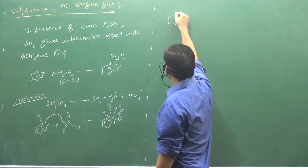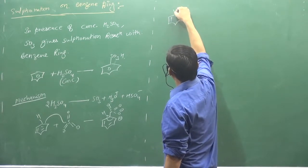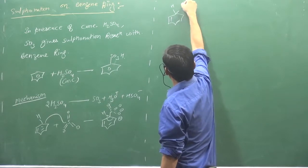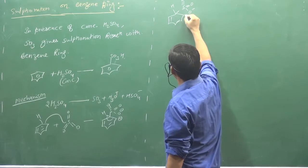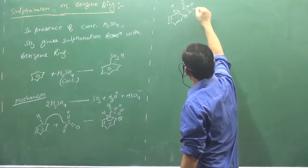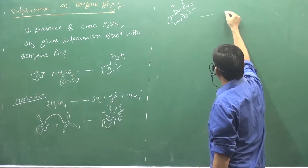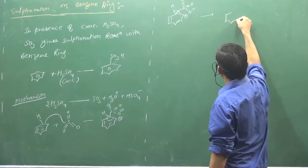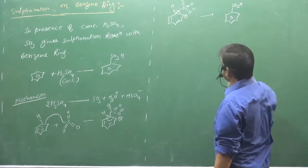In the next step, hydrogen, sulfur, double bond O, double bond O. Here is a plus charge, so this bond will shift here and then hydrogen plus will shift here. This oxygen. So what will you get? SO3H will get as the last product.